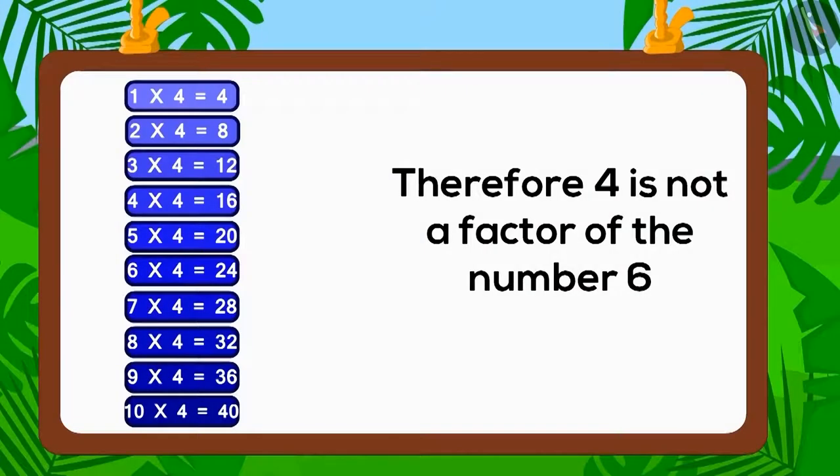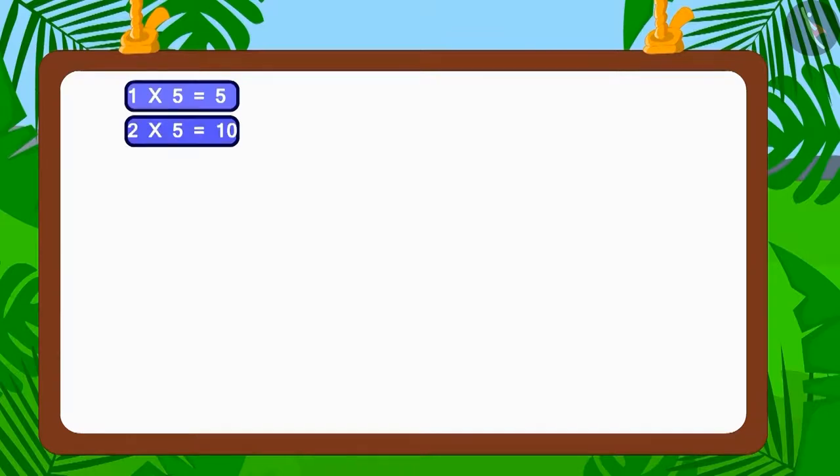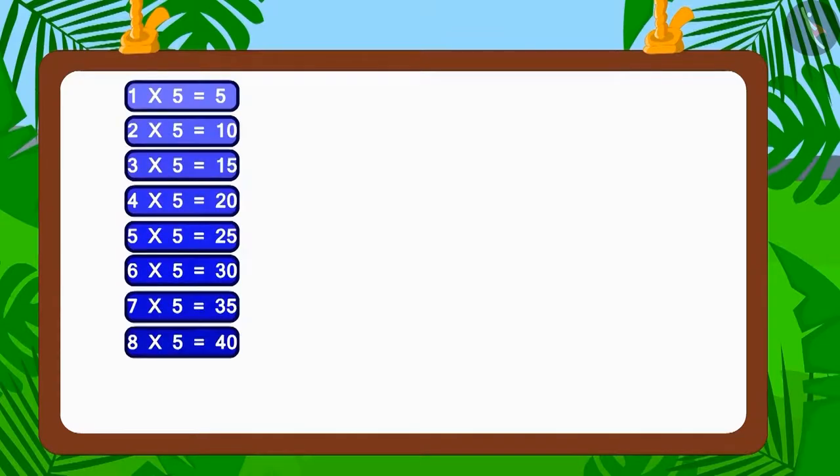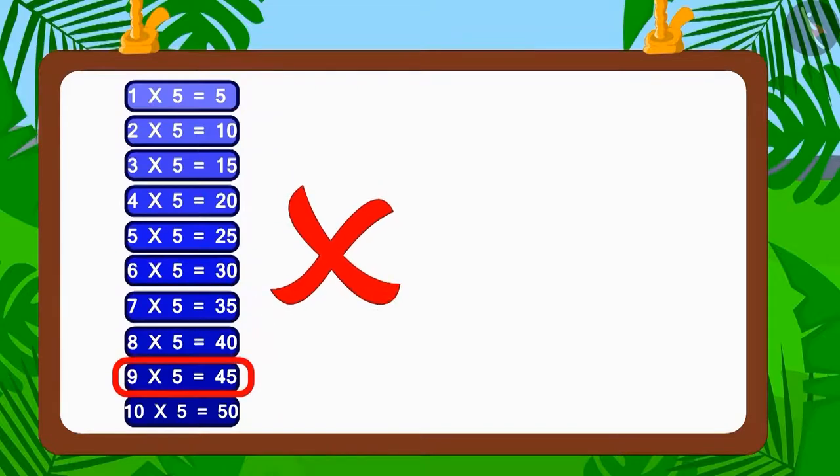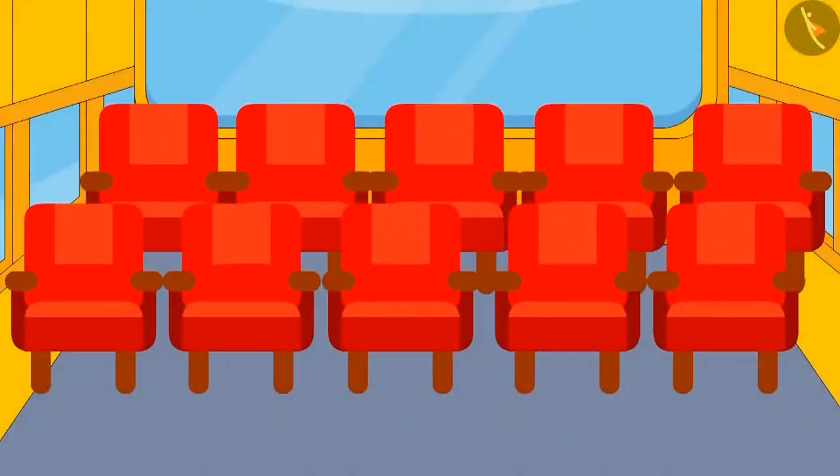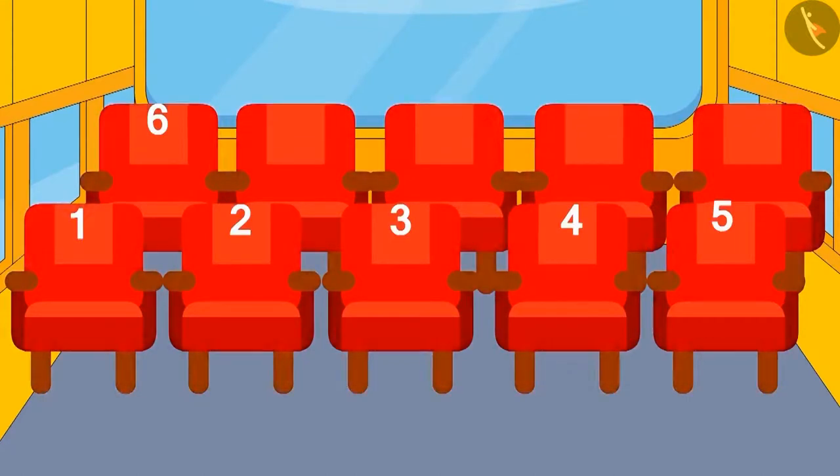Similarly, if we look at the table of five, then we will find that five is also not a factor of number six. So, a bus in which five people sit in each row will not be of any use to the villagers.